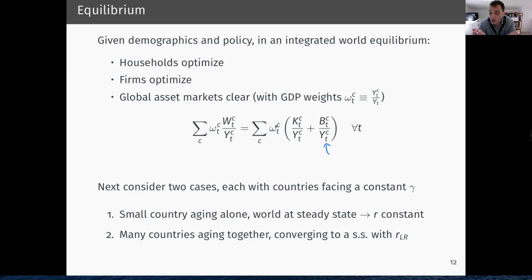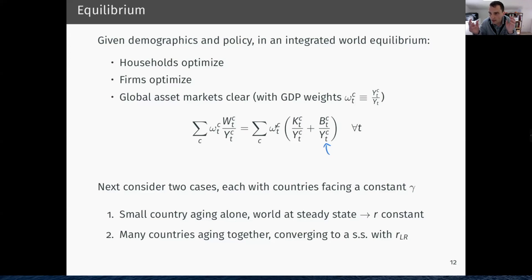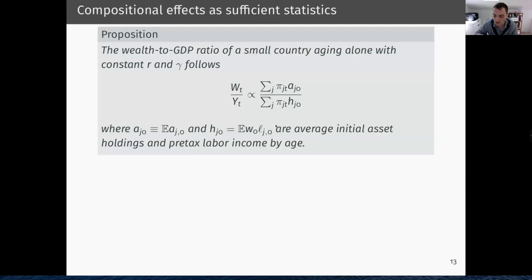We consider two cases. One is a thought experiment: a small country with weight zero in world GDP is aging on its own while the world is at a steady state — the interest rate is constant — and we project out the effect of that demographic transition on its wealth and net foreign asset position. That helps us think about the effect on asset demand. Then we put all countries aging together, converging to a steady state with a long-run interest rate, which leads to all the key results in the paper.